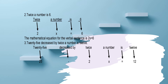Number three: 25 decreased by twice a number is 12. We copy 25; 'decreased by' means subtraction; 'twice a number' gives us 2x; and 'is' equals 12. Therefore, the mathematical equation is 25 minus 2x equals 12.